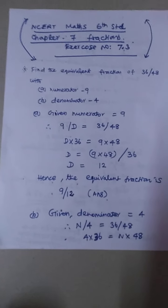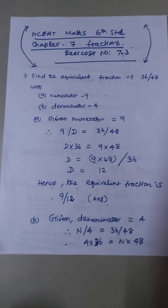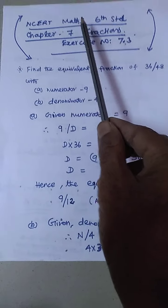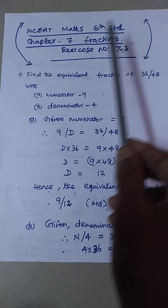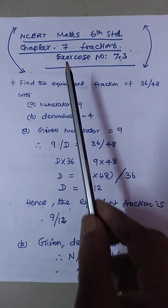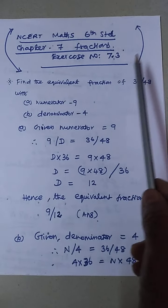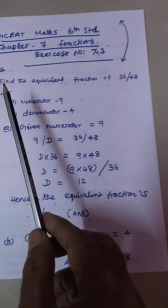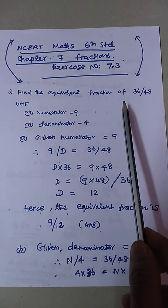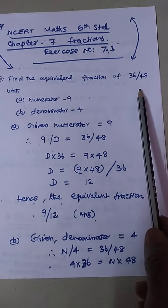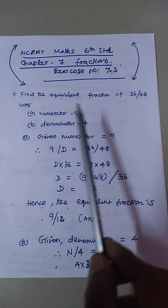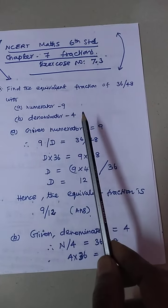Welcome to Sairam Arul channel. NCERT Maths 6th Standard Chapter 7 Fractions, Exercise 7.3. Find the equivalent fraction of 36/48 with numerator 9 and denominator 4.